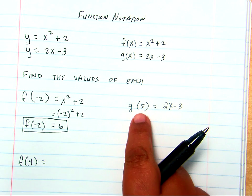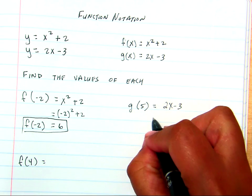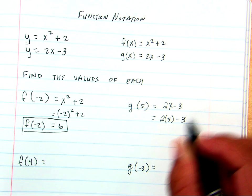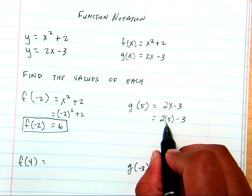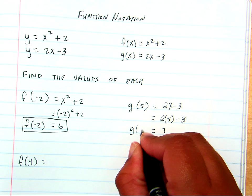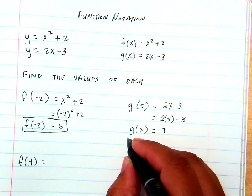So, anywhere we see an x now, we're going to replace it with 5. So, 2 times 5 minus 3. Well, 2 times 5 is 10. 10 minus 3 is 7. So, g of 5 is equal to 7.